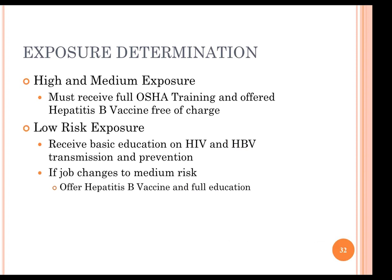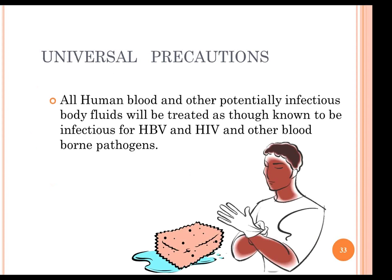For exposure determination: high and medium exposure positions must receive full OSHA training and are offered the hepatitis B vaccination free of charge. Those at low risk receive basic education and may or may not be offered the hepatitis B vaccination — it is not required. Universal precautions apply: make sure you are covered using gloves, eye guards, or gowns depending upon the exposure.